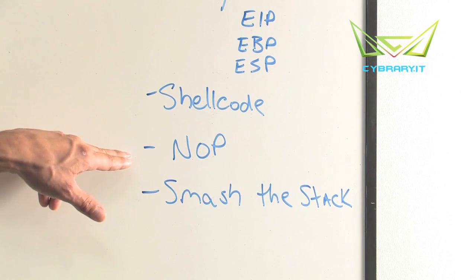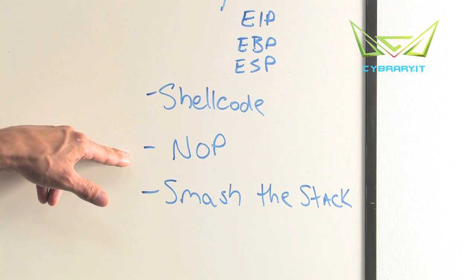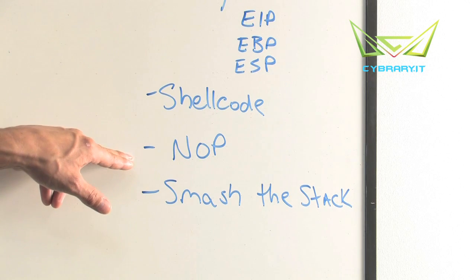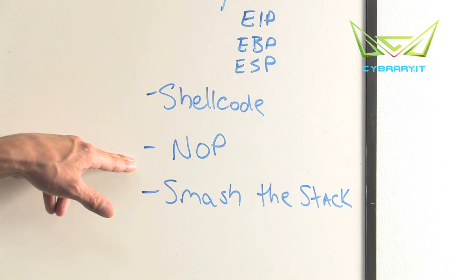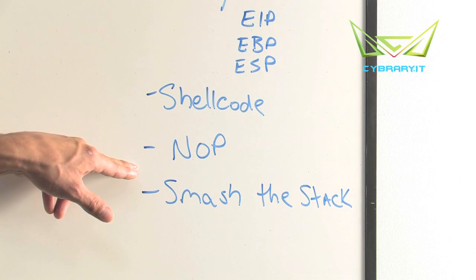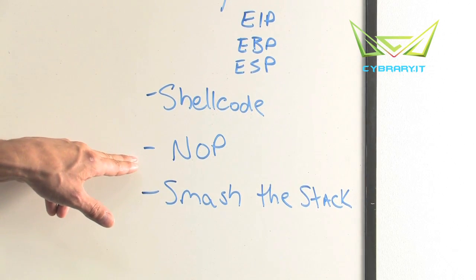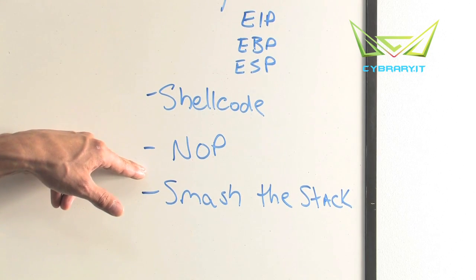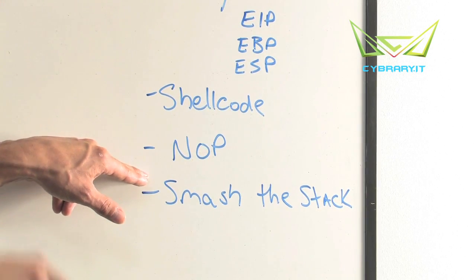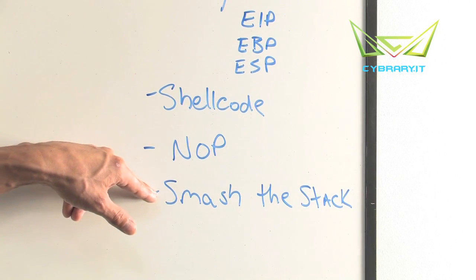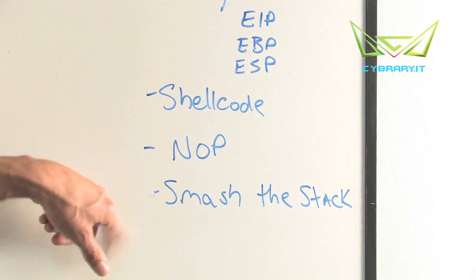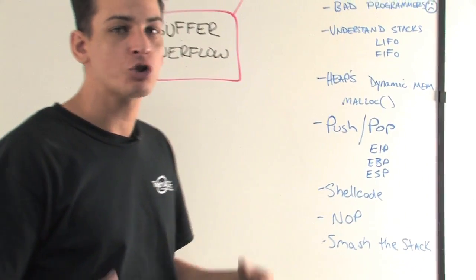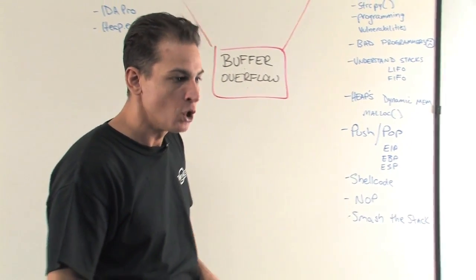Then you have null operators — sometimes called no-ops or NOPs. In hex you could use 0x90. It's basically a null operator, filling the stack with all nulls to bypass an instruction set, thereby manipulating where the next instruction set actually comes in. There's also the concept of smashing the stack, which is just layman's terms for creating a buffer overflow.